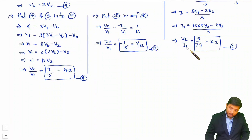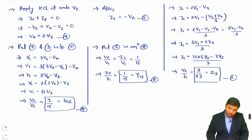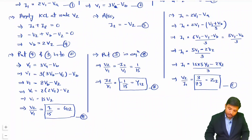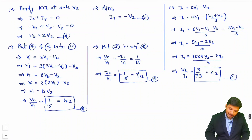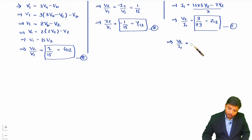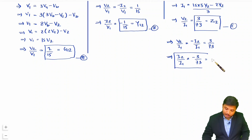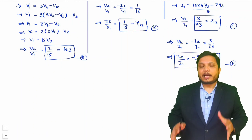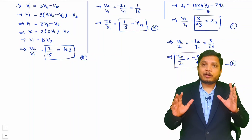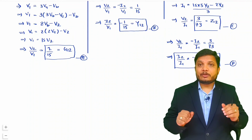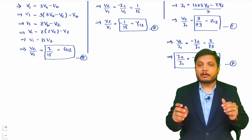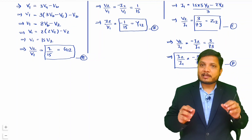Finally, we just need I2 by I1 for the current gain alpha12. Since V2 equals minus I2, substituting into V2 by I1 equals 3 by 73 gives minus I2 by I1 equals 3 by 73, so I2 by I1 equals minus 3 by 73. That is the current gain alpha12. I hope you understood this. You need to understand the meaning of the terms, then solve the equations — practice is the key to these types of questions.